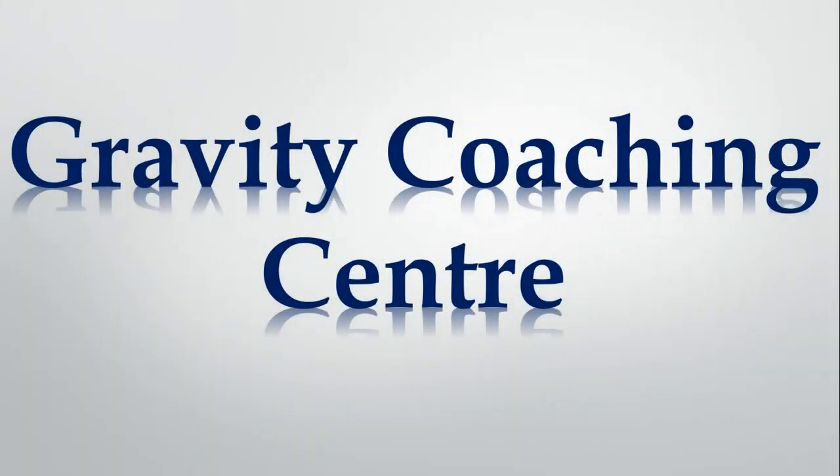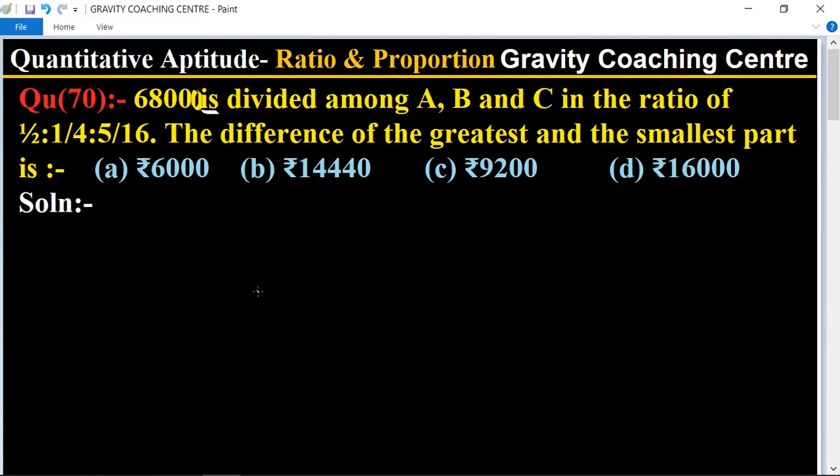Welcome to our channel Gravity Coaching Centre. Quantitative aptitude, ratio and proportions. Question number 70: 68000 is divided among A, B and C in the ratio of 1/2:1/4:5/16. The difference of the greatest and the smallest part is, in the given questions.